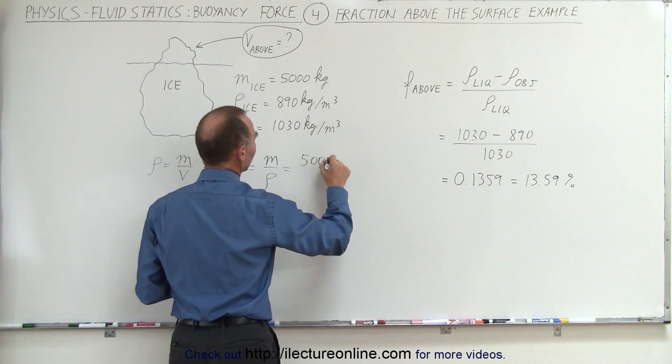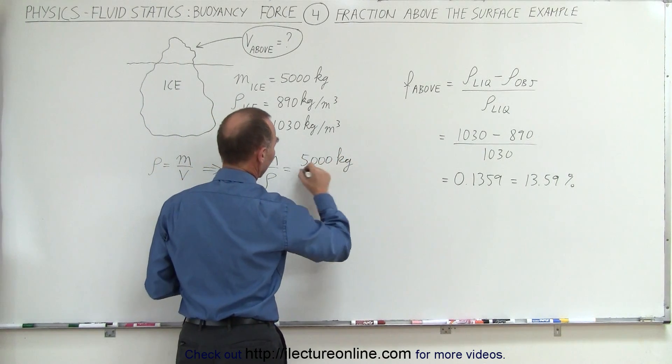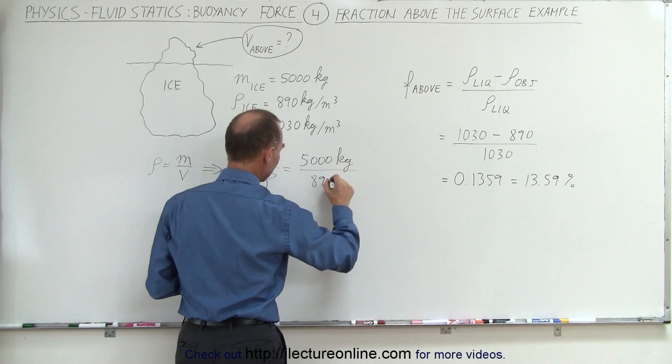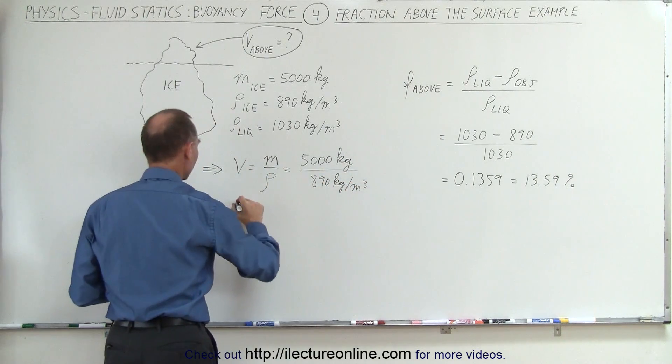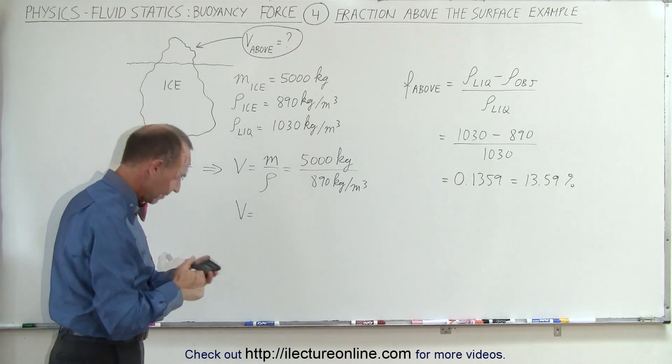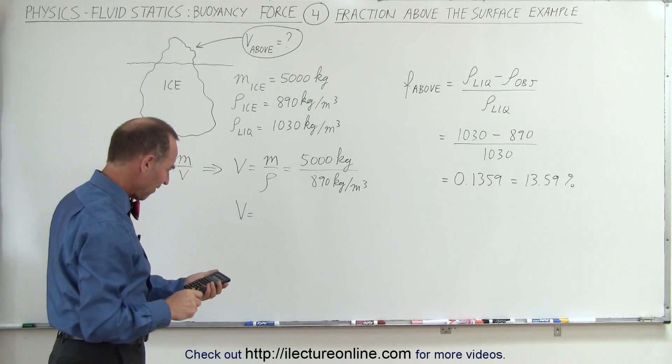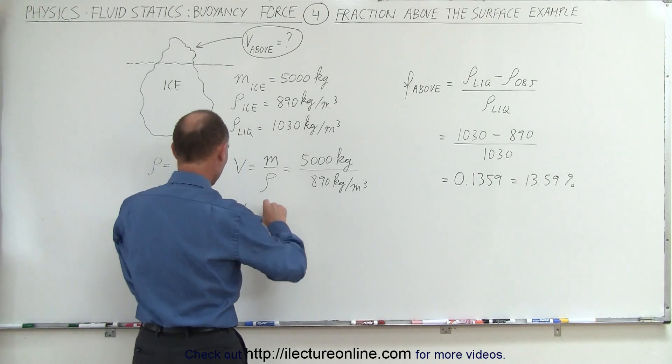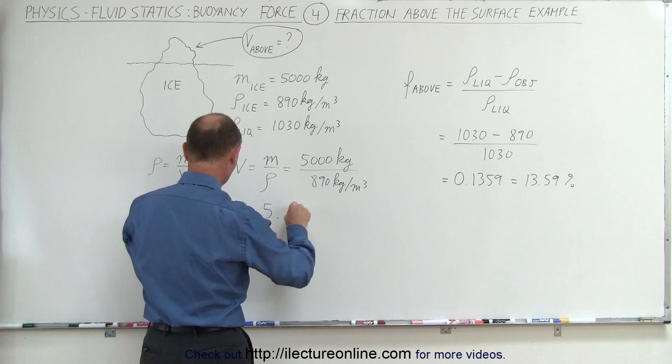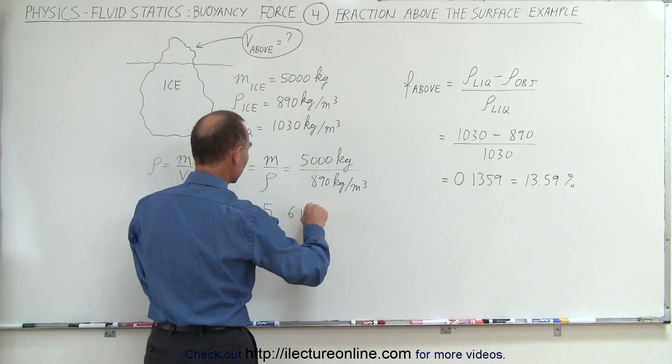In this case, the mass is 5,000 kilograms, and the density is 890 kilograms per cubic meter, which means the volume of the iceberg is 5.618 cubic meters.